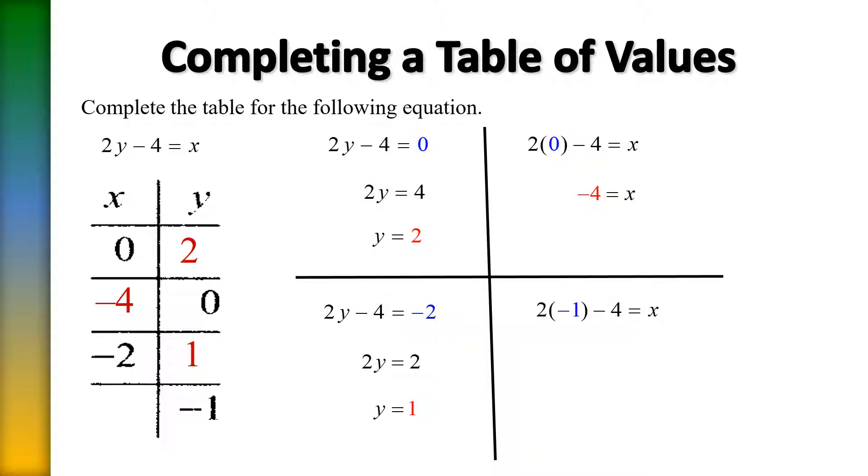Using order of operations we want to multiply 2 times negative 1. That's going to give me negative 2. And now we want to combine negative 2 with negative 4 which will give me, that's correct, a negative 6.